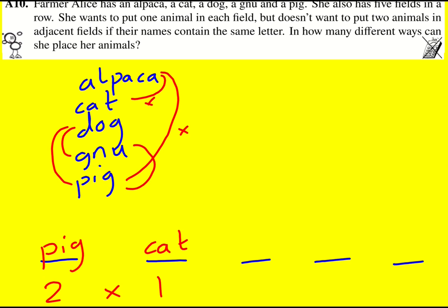And then remember, the cat can't go next to the alpaca, but it can go next to the dog or the gnu.